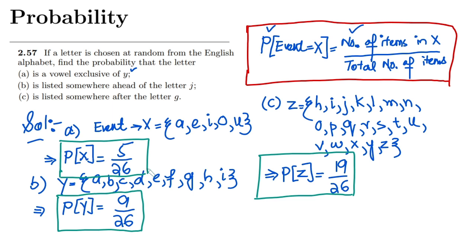That is it for today, in which we have seen how to find the probability of events where we have a certain number of fixed elements in the sample space, and out of that sample space we have certain conditions to pick different numbers. That is basically the underlying concept for all questions like this. I will see you with some more questions in our upcoming video. See you soon.